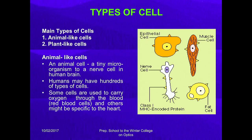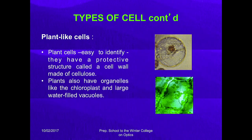Plant-like cells are easy to identify because they have a protective layer outside called the cell wall, made of cellulose. They contain organelles like the chloroplast and very large water-filled vacuoles. Plants have big vacuoles while animal cells have very tiny vacuoles.